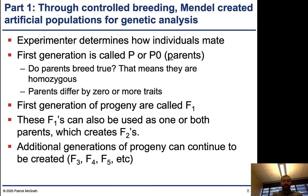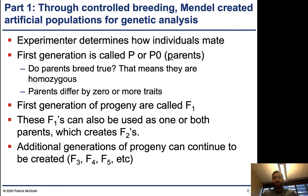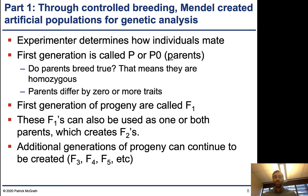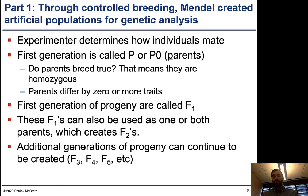If plants breed true, the trait is stable through time. So if you breed a tall plant with itself and you only get more tall plants, that means it's breeding true. You can also have plants that are tall but able to produce both tall and short offspring — in that case they don't breed true. The genetic definition of breeding true simply means that they are homozygous: whatever allele they have, both copies are the same. The parents typically differ by zero or more traits.